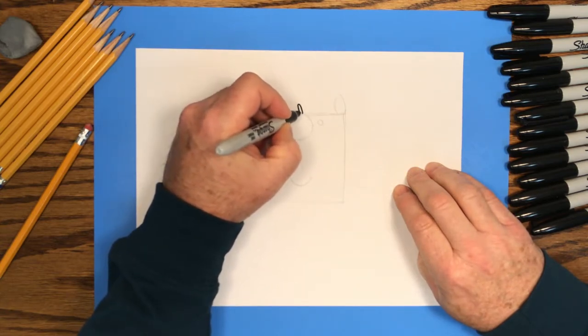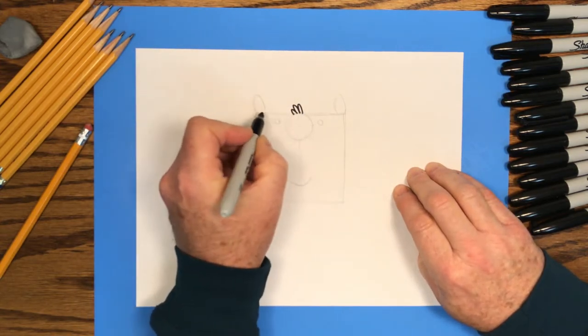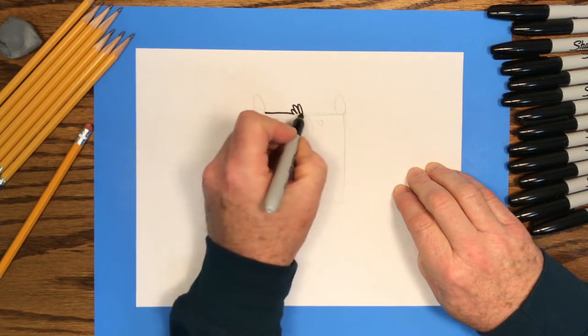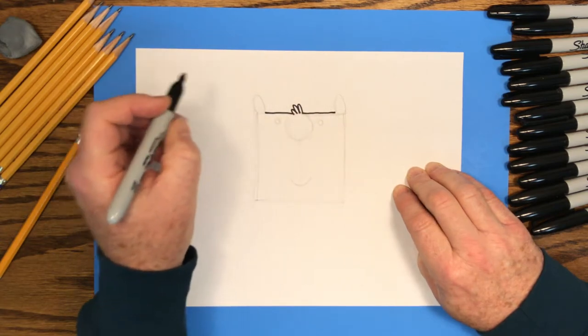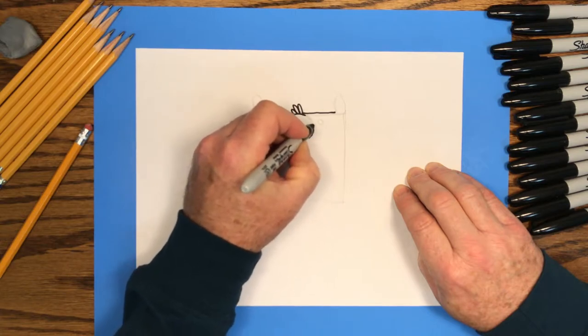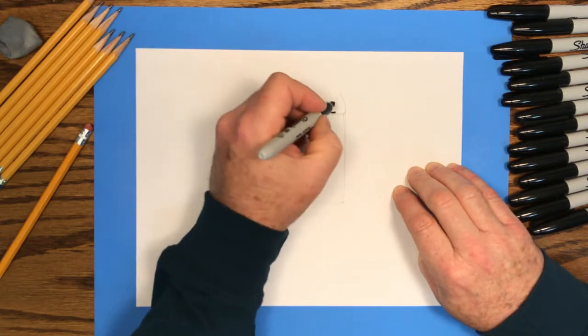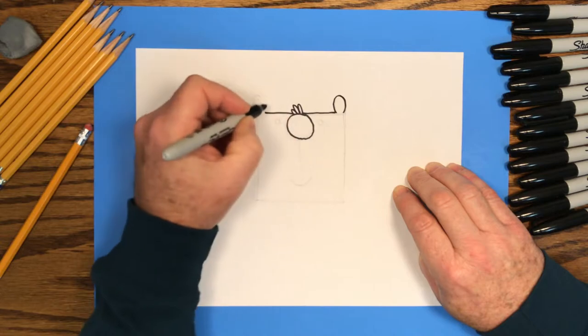I'll start with a few little bumps on top. That'll be hair sticking up on his head. And then we'll trace that pencil line across the top of the square. We'll put in that circle nose, and then we'll trace those little oval ears.